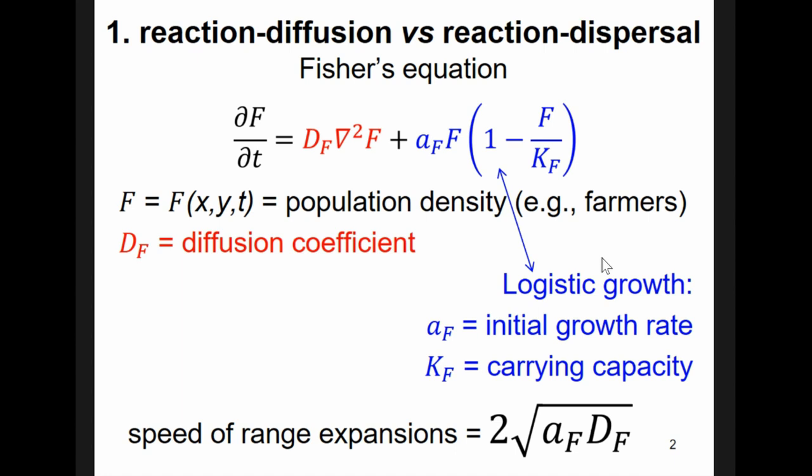But it can be hunter-gatherers. And here we have this Laplacian, which is a well-known operator, but this is not necessary, because we shall see later that a better and more precise model does not need it. The important fact is that when this equation is used to describe a human range expansion, then the speed of this expansion is given by Fisher's equation.